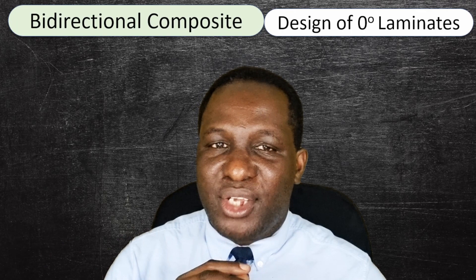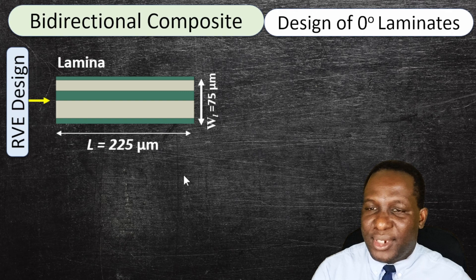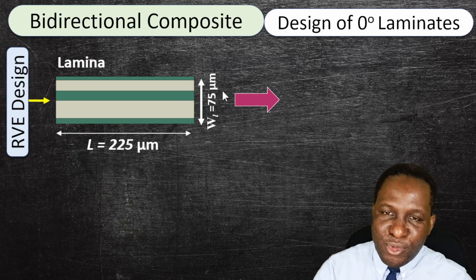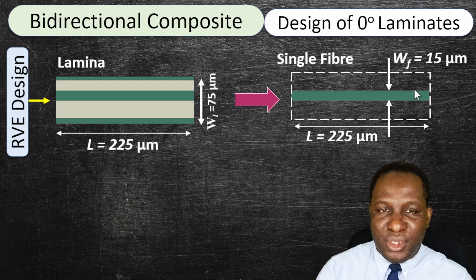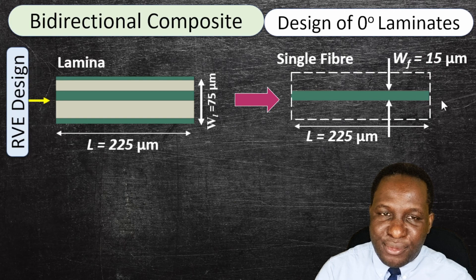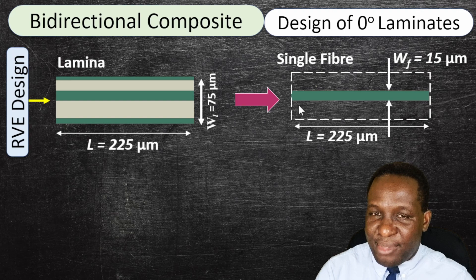Let's look more closely at how to design the different laminates. The first is the 0-degree laminate at the top, which has a length of 225 microns and a height of 75 microns. Looking at the fiber from the side, it appears as a long fiber with a height of 15 microns — the diameter of the fiber. The volume fraction formula for this 2D lamina is: number of fibers × length × width of fiber, to determine what fraction the fiber covers in this view.